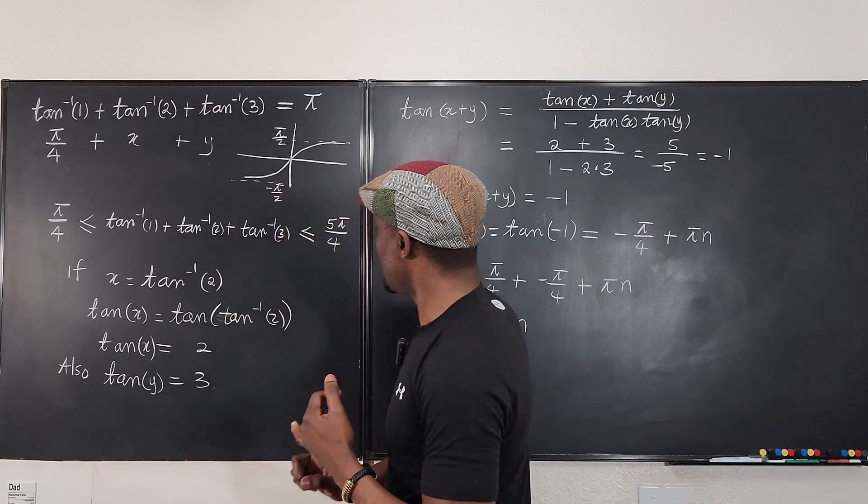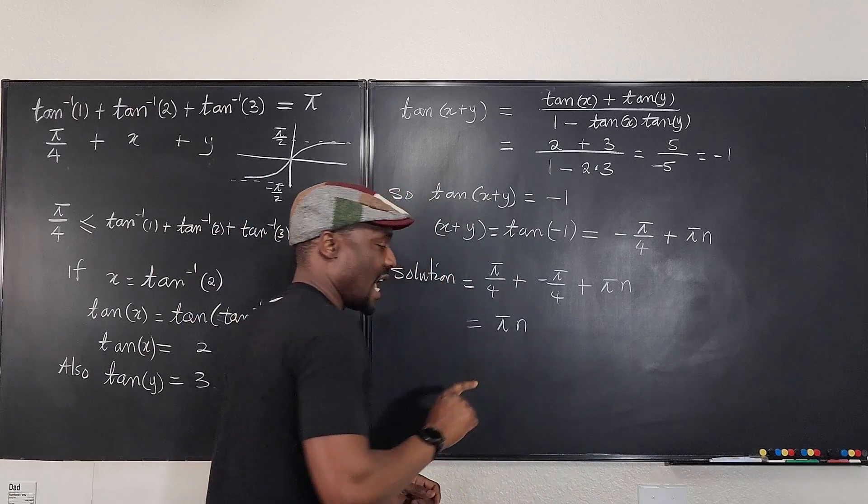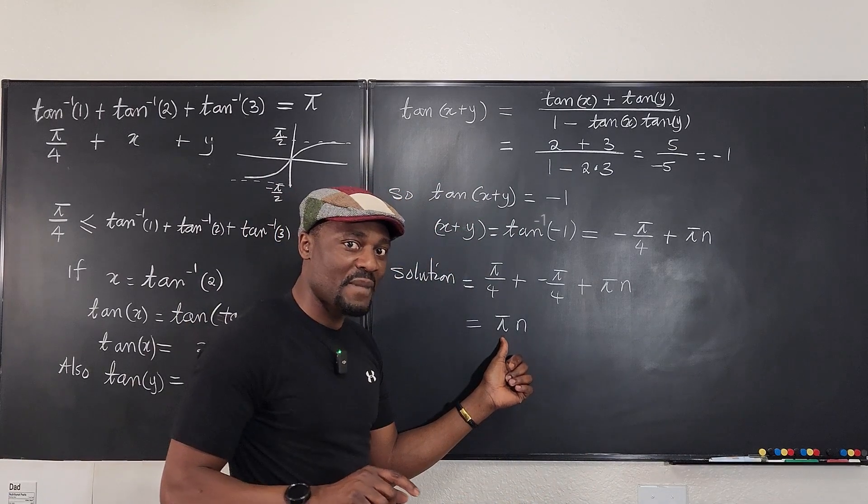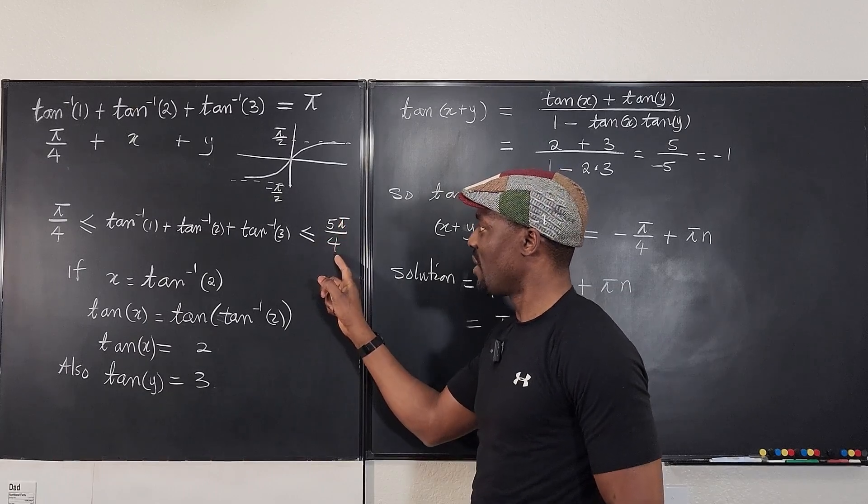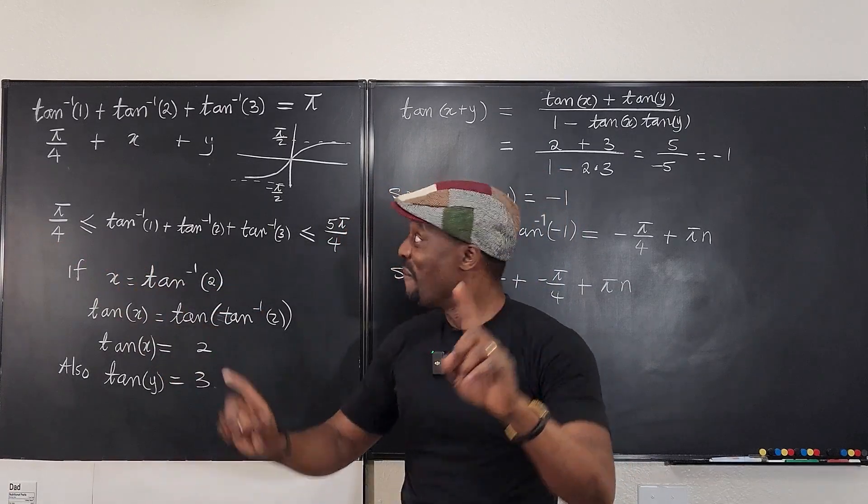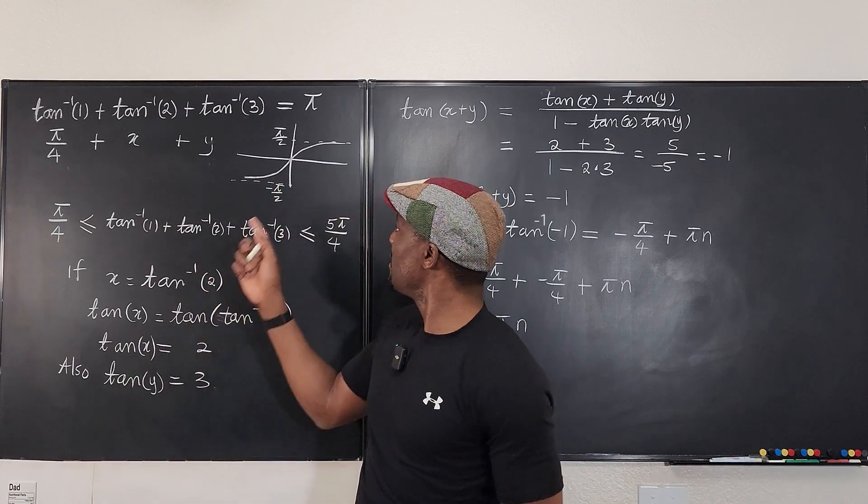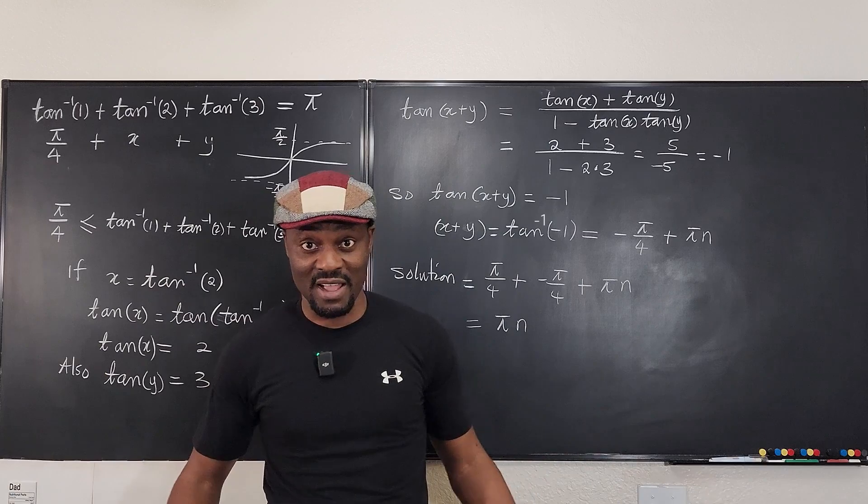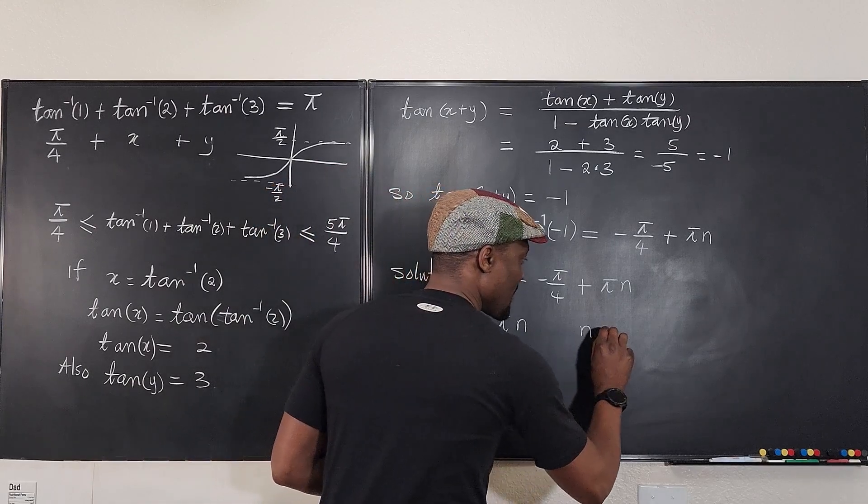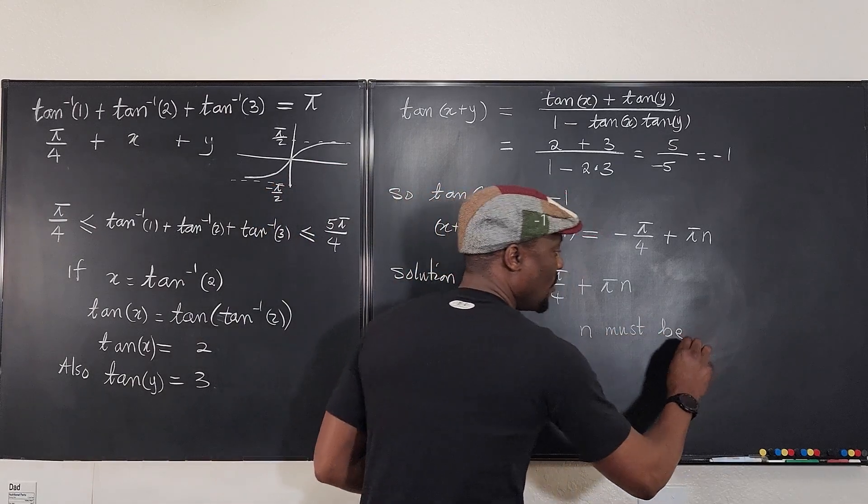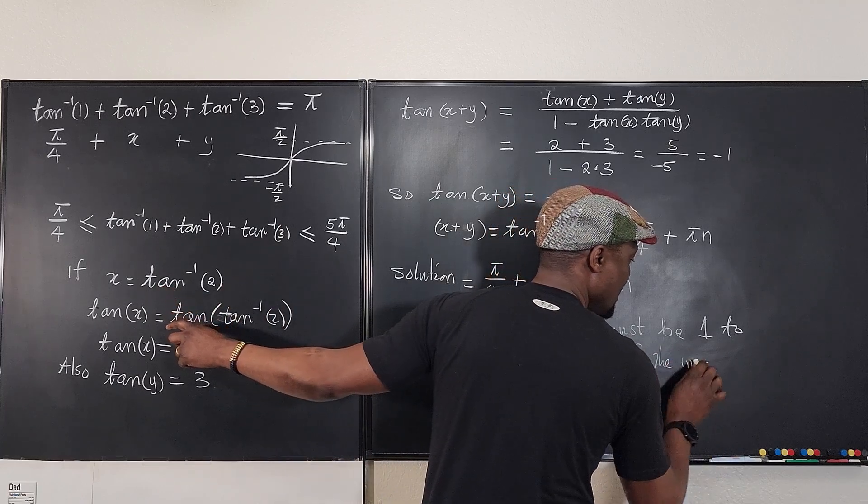What can n be? Can n be zero? If n is zero, then we're going to get zero. But zero is not in this interval, so the answer is not zero. Can n be one? If n is one, this is going to be π, and that means π is in this interval, π is between this and this, because this is slightly greater than π, and this is nice. So π is a good answer. Can n be 2? Remember n has to be an integer. Can n be 2? 2π is already greater than this value. So the only value we can accept for this is when n equals 1 and this is equal to π. So n must be 1 to satisfy the inequality.